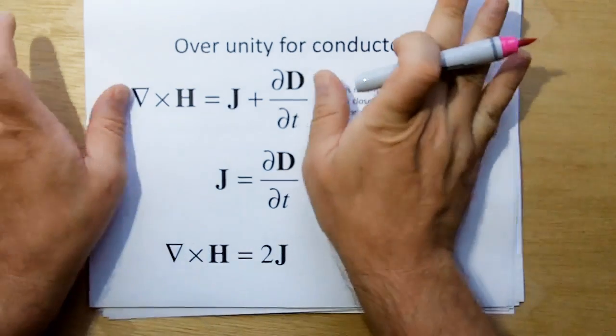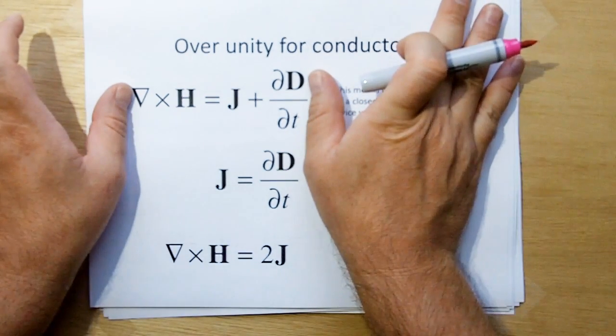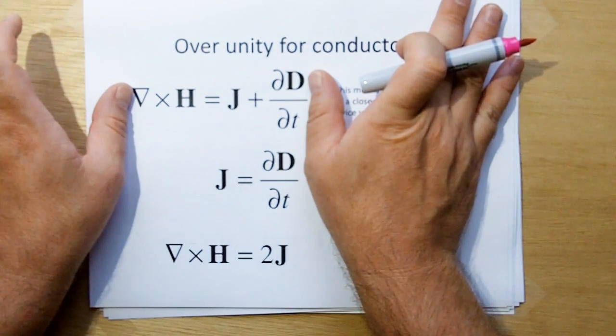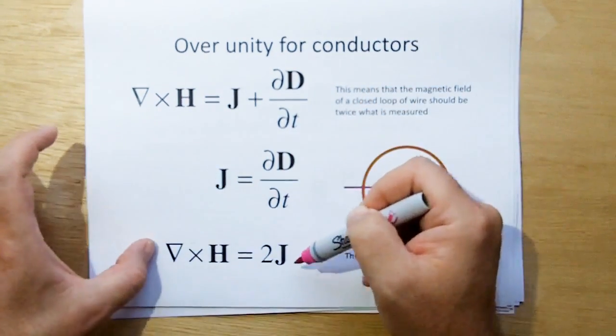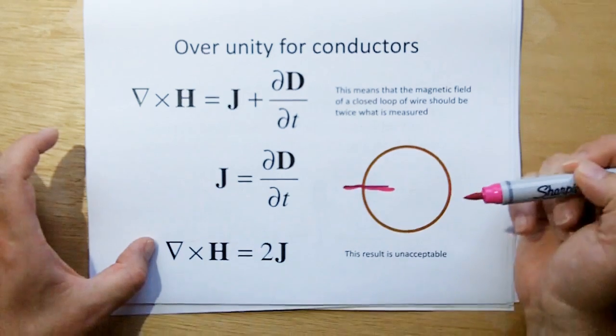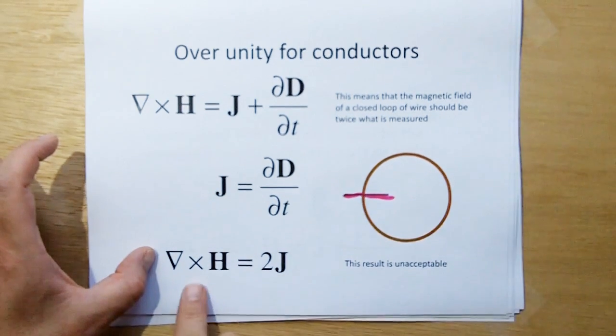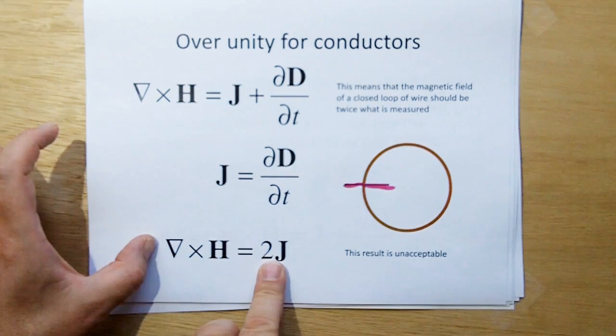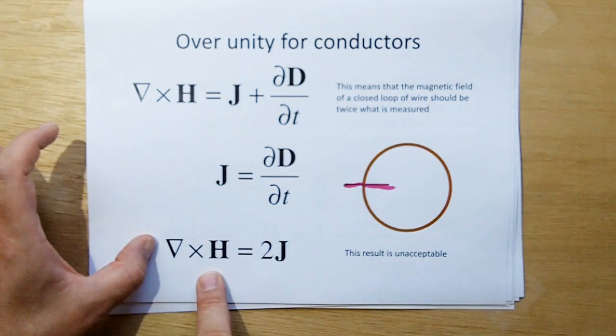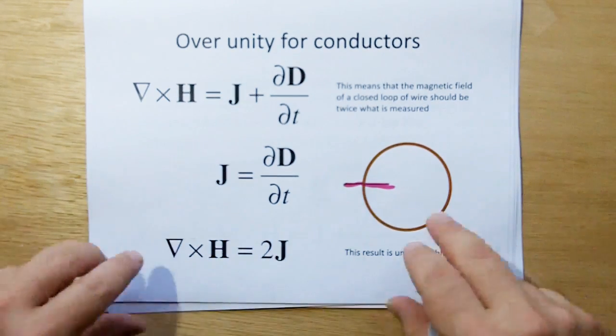So if we take Maxwell's original wonderful thing that he did, which I think is complete gibberish, and we replace this with this, we end up saying that, well gee, if I look anywhere in a real conductor, the magnetic field contribution is twice the current in the wire. Which means the magnetic field is twice what we should measure, which is wrong. This is over unity. This result is unacceptable.